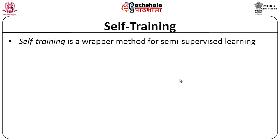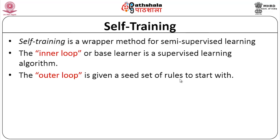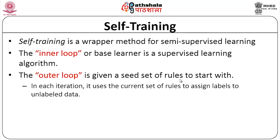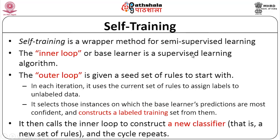Self-training is a wrapper method for semi-supervised learning where the inner loop base learner is a supervised learning algorithm — it takes patterns and exactly matches them, performing exact learning. The outer loop starts with a seed set of rules; in each iteration, it uses the current set of rules to assign labels to unlabeled data, selects those instances on which the base learner's predictions are most confident, constructs a labeled training set from them, and calls the inner loop to construct a new classifier. The cycle then repeats.